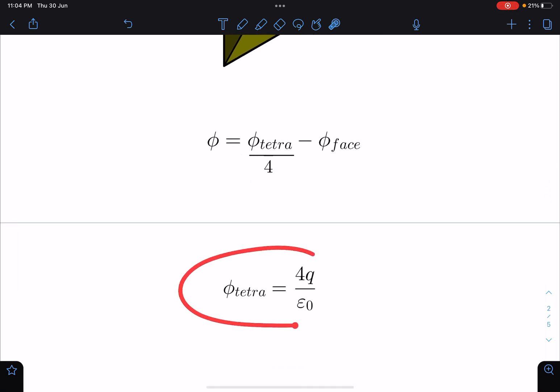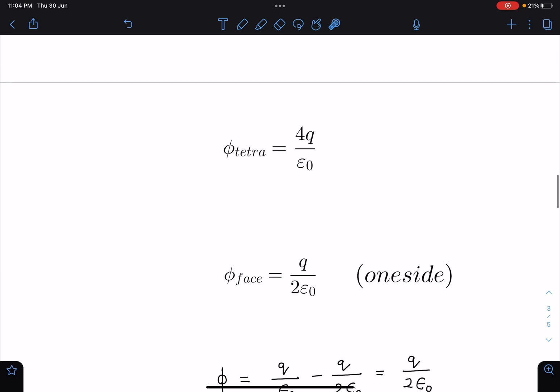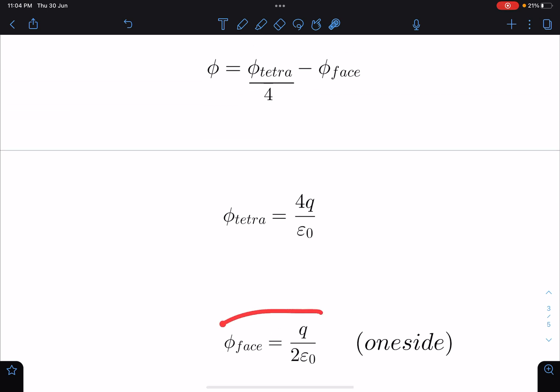So phi tetra is 4q by epsilon naught, q is the charge on one of the surface. So let us substitute here and phi face, the total it will generate q by epsilon naught and half will go one side and half will go other side.